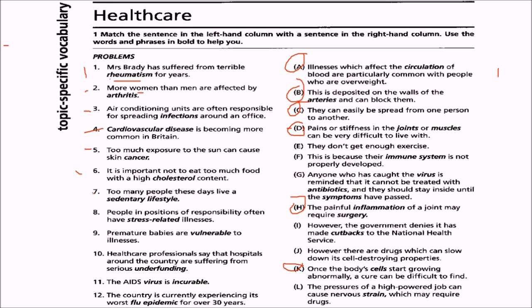Seventh: too many people these days live a sedentary lifestyle. Seventh will match with E — they don't get enough exercise. A sedentary lifestyle means not getting enough exercise.